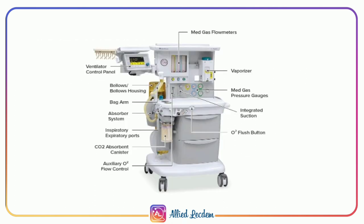The anesthesia machine consists of a ventilator control panel to monitor the patient's ventilatory status, bellows or bellows housing, a bag arm, an absorber system, and inspiratory and expiratory ports which connect the patient to the ventilator, and a carbon dioxide absorber canister where the soda lime is refilled.